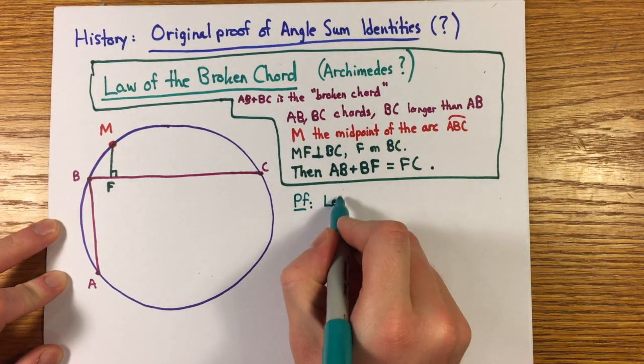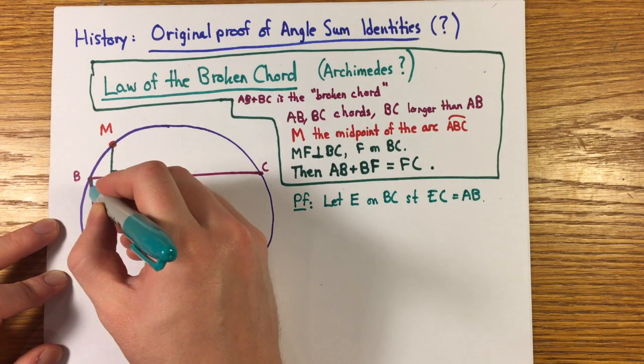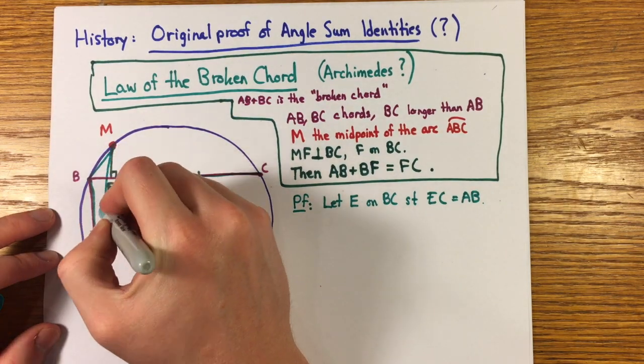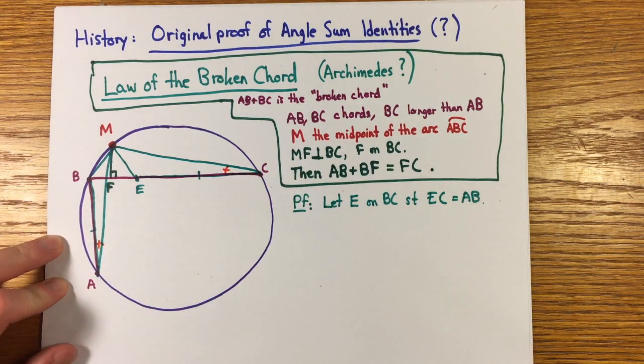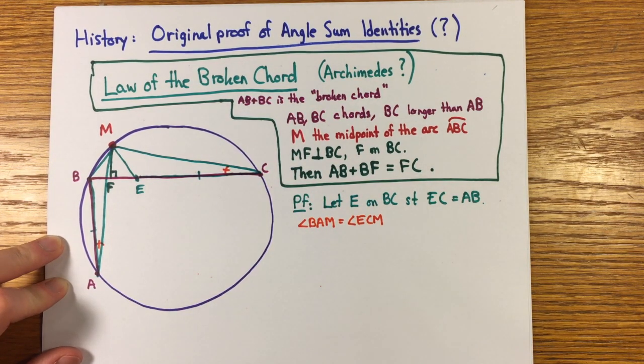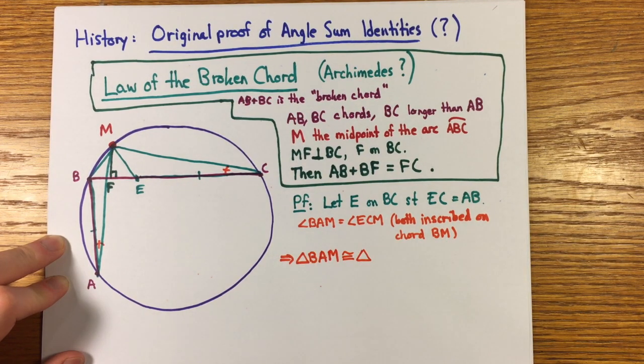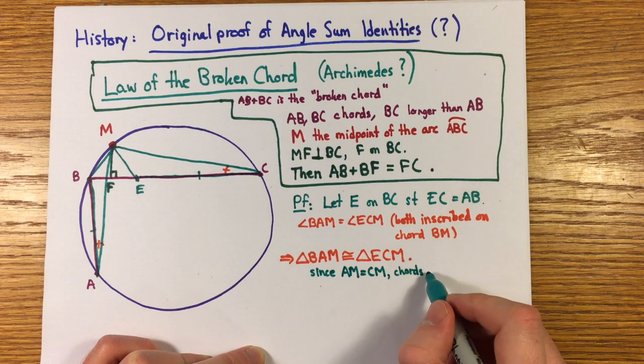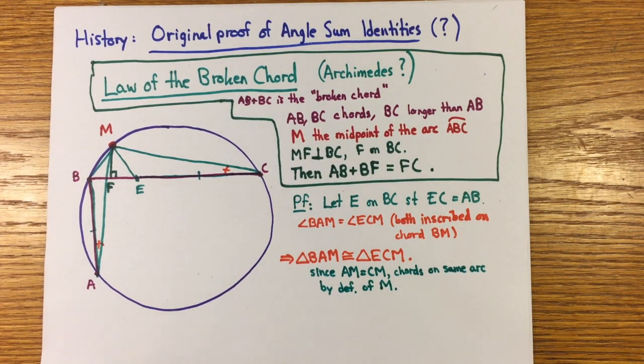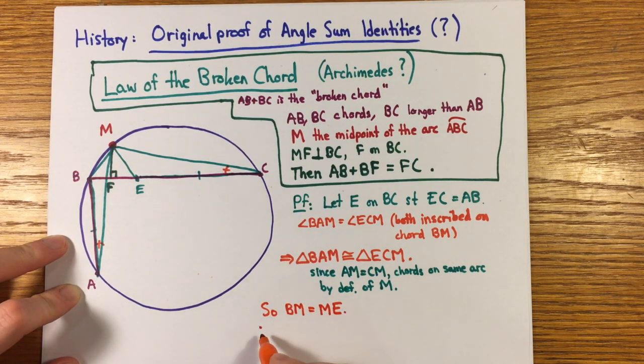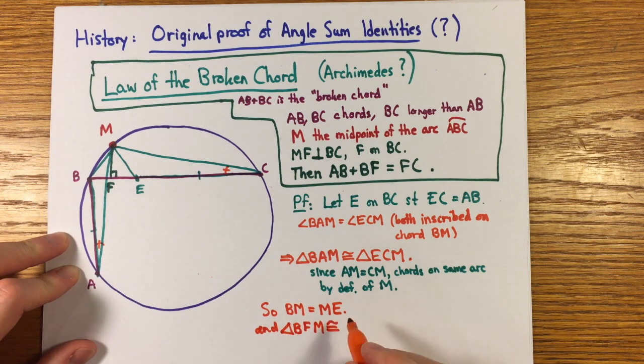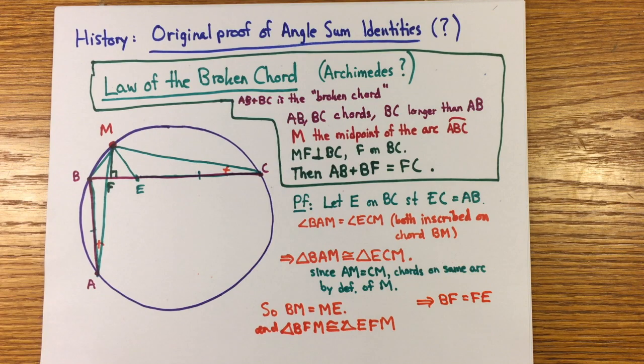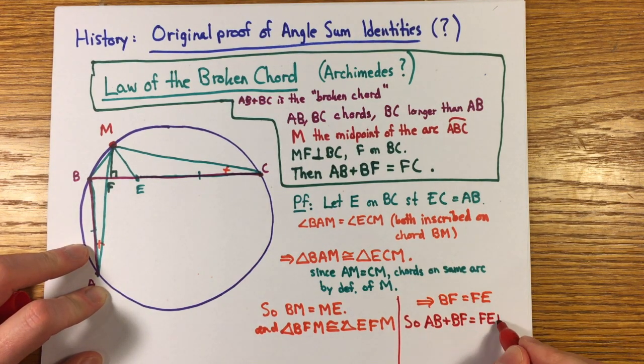The proof is more involved without trigonometry. I'll just give the proof. Take point E on BC so that EC is the same length as AB. Now, angle BAM and BCM are the same since they're inscribed on the circle in the same arc. And also, AM = CM since the two chords lie on equal arcs by the definition of M as the midpoint. And that tells you that triangles BAM and ECM are congruent. Well, that means that BM = ME. So, BFM and EFM are two right triangles with two equal sides so they're congruent. And BF = FE. And therefore, AB + BF = FE + EC. Done.